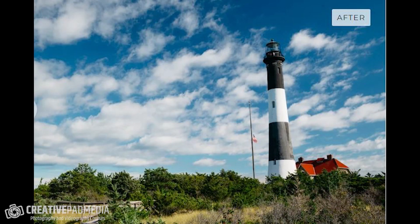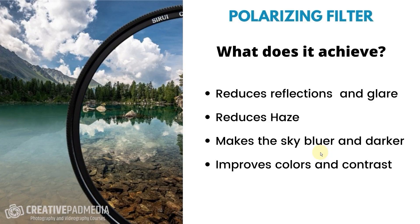Because the polarizing filter cuts down that bad type of light coming into the camera, it also improves the colors and the contrast. Therefore your landscape shots just seem more 'punchy' — with a lot of contrast and good colors — as opposed to not using the polarizing filter.